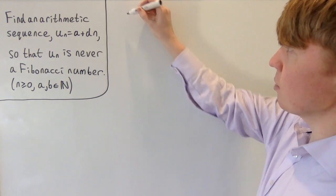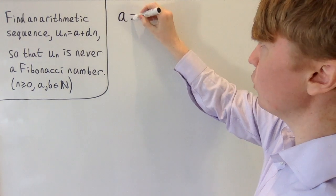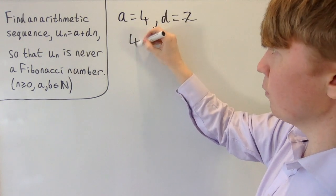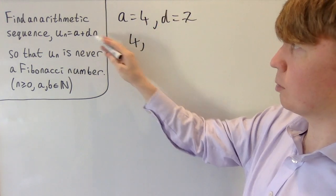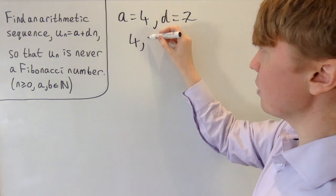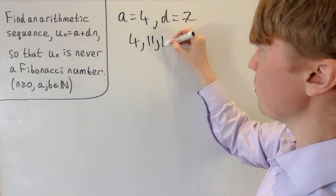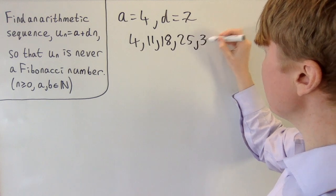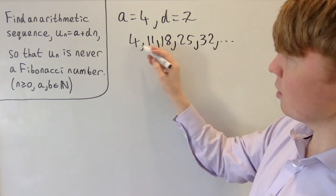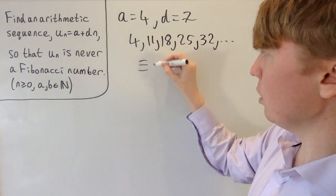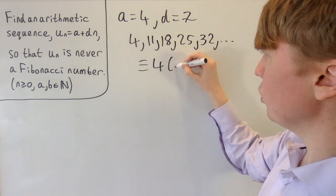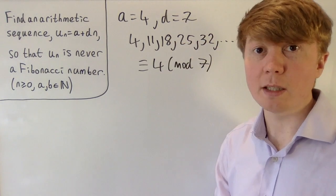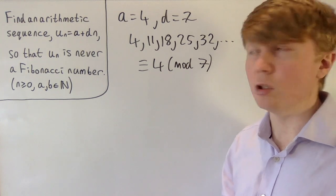If we look at an example where a is 4 and d is 7, then our first term would just be 4 — that's 4 plus 7 times 0 — then you keep going up in 7, so it's an arithmetic sequence. All of these numbers, thinking of them modulo 7, are equivalent to 4 modulo 7. So if you divide any of these numbers by 7, you'd get a remainder of 4.